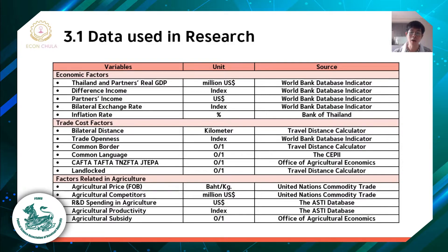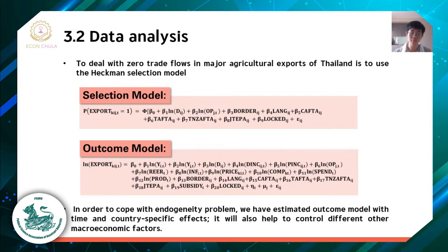Regarding data used in the research, we consider agriculture exports of Thailand as the dependent variable. Other variables used in this study are based on the gravity model, including economic factors, trade cost factors, and factors related to agriculture. We obtained data from the World Bank Database Indicator, Bank of Thailand, United Nations Commodity Trade, Travel Distance Calculator, CEPII, ASTI Database, and Office of Agricultural Economics. To deal with zero trade flows, we use Heckman's selection model.